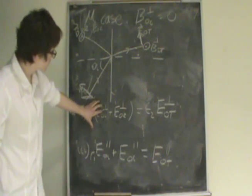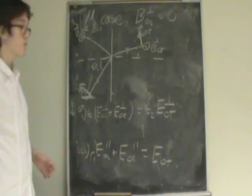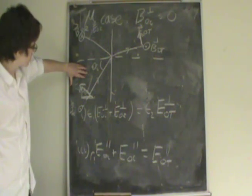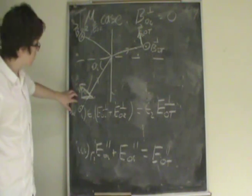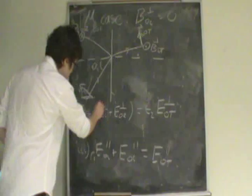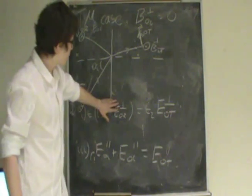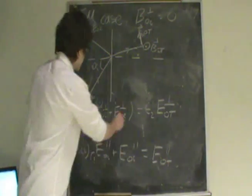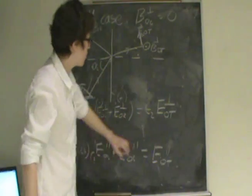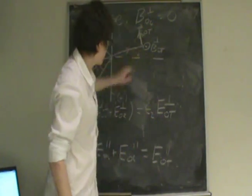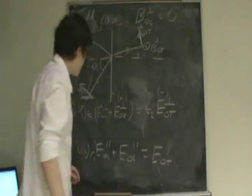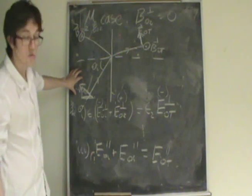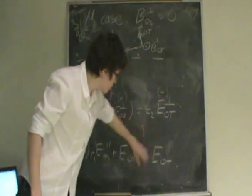We can further determine the sign, whether positive or negative, by seeing the direction. For the incoming wave, the electric part is in an opposite direction, therefore it's going to be negative. The reflected wave is in a positive direction, therefore it's positive. The transmitted wave is in a negative direction, therefore it's negative. For the parallel components, they're all pointing upward, which is a positive direction, so these are all going to be positive.